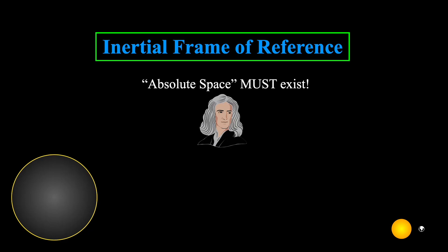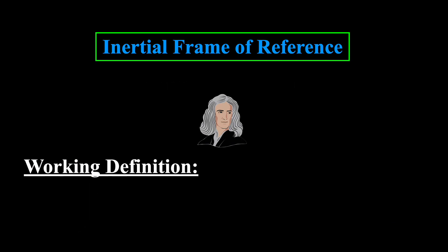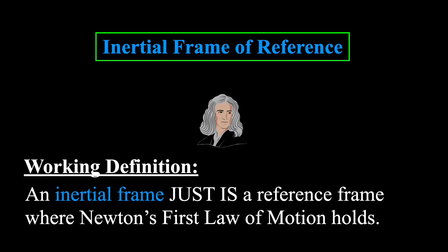There are even more subtleties I could go into, but instead, I'll end by giving you a working definition. For the purposes of studying or actually doing classical Newtonian mechanics, the most useful and commonly accepted definition of an inertial frame of reference is to just say that it is one in which Newton's first law of motion holds.